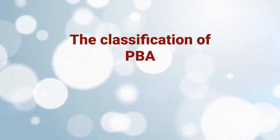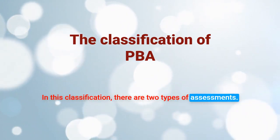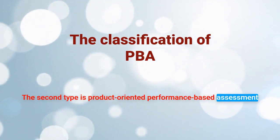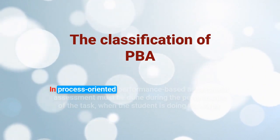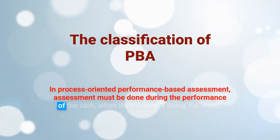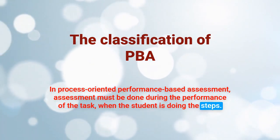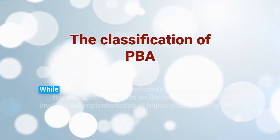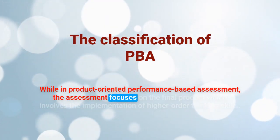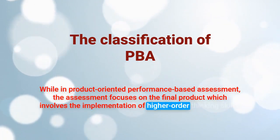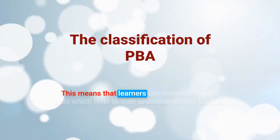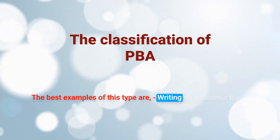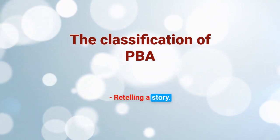Here is the classification of performance-based assessment. There are two types: the first is process-oriented performance-based assessment, and the second is product-oriented performance-based assessment. In process-oriented PBA, assessment must be done during the performance of the task when the student is doing the steps. The best examples are presentation and role-play. In product-oriented PBA, the assessment focuses on the final product, which involves the implementation of higher-order thinking skills. The best examples are writing an academic topic, story-writing competition, retelling a story, and an arts exhibition.